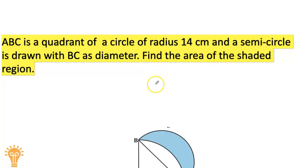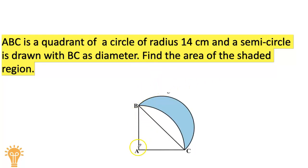The figure shows the quadrant ABC with a 90-degree angle. AB and AC are the radii, BC is the diameter, and the semicircle shaded portion is here. Let's move to the solution.